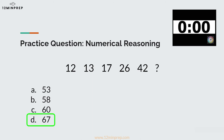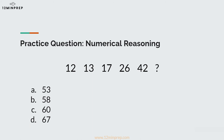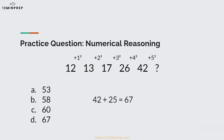The correct answer is D. Take a look at the difference from one number to the next: plus 1, plus 4, plus 9, and plus 16. These are perfect squares — 1 squared, 2 squared, 3 squared, and 4 squared. This means the next number should add 5 squared, which is 25. 42 plus 25 gives us 67, making D the correct answer.